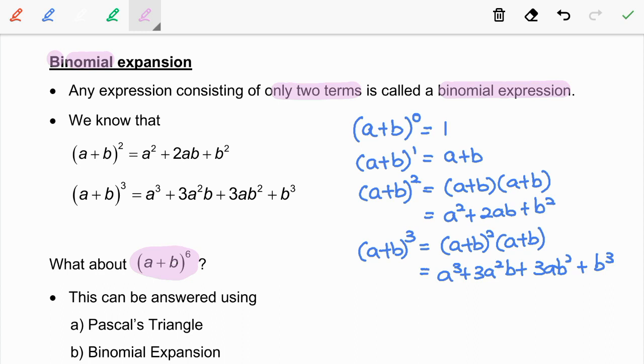So, that's where Pascal's triangle and binomial expansion become useful. These two methods can help us easily find the expansion.